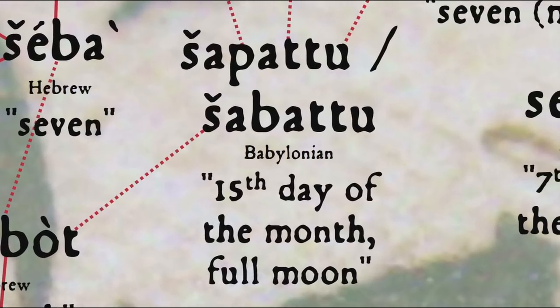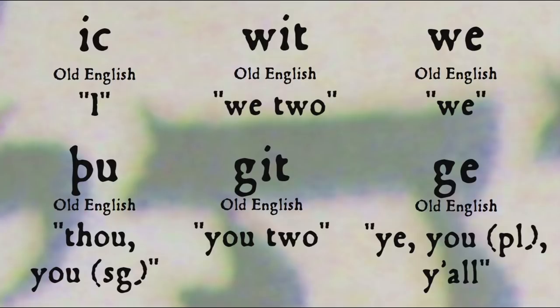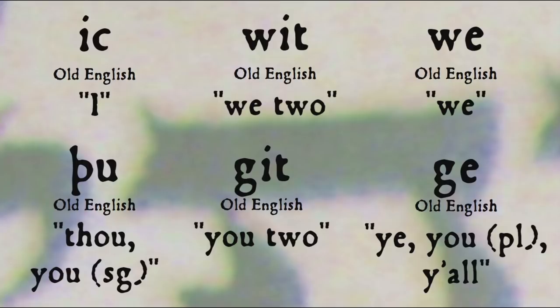One suggestion is that shapatu comes from the dual form of the word for seven — so 'two sevens.' We don't have dual forms in English anymore, but they did exist, at least for some pronouns in Old English: singular ic 'I,' dual wit 'we two,' and plural we; and singular þu — old-fashioned 'thou' or modern singular 'you' — dual git 'you two,' and plural ge — old-fashioned 'ye,' or modern 'you' or 'y'all.'